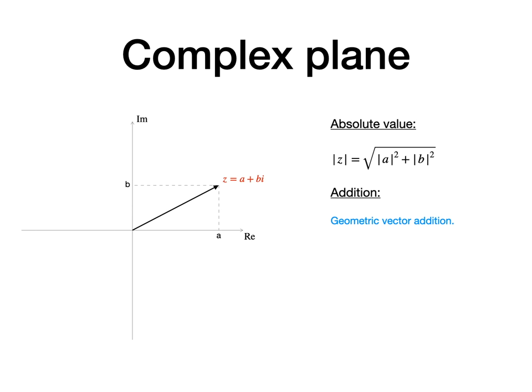Complex numbers have a very intuitive geometric interpretation. They can be thought of as points in the two-dimensional plane. The horizontal coordinate of the point represents the real part, the vertical coordinate the imaginary part. For example, the complex number z, which equals a plus b times i, is represented by a point at coordinates ab in the plane. As shown in the picture, we can also draw an arrow vector from the origin to point z. The length of this vector is called the absolute value of z. It can be calculated by the Pythagorean theorem.